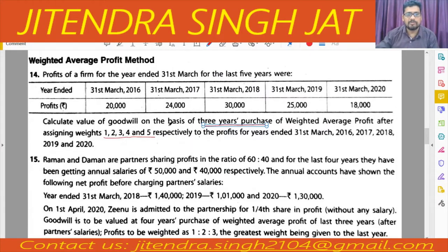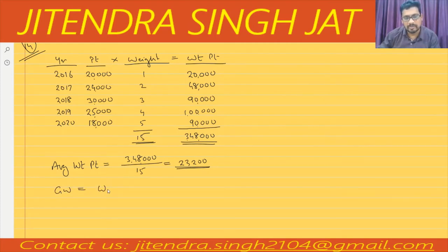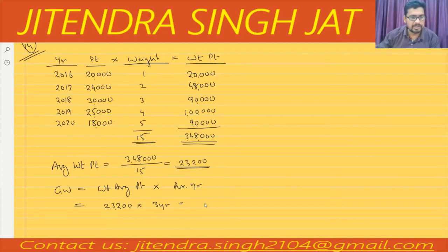Now we calculate the value of goodwill on the basis of three years purchase. The formula is: Goodwill = Weighted Average Profit × Number of Purchase Years. So 23,200 × 3 = 69,600.